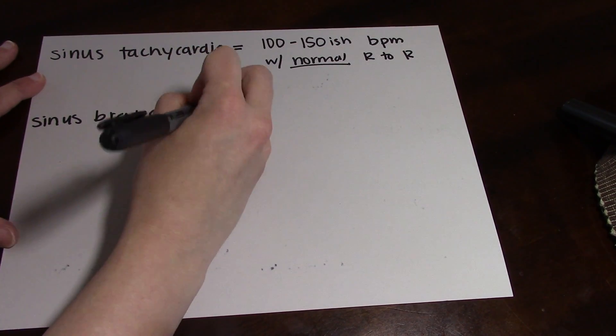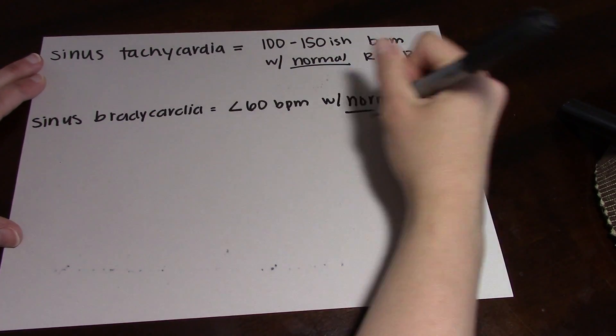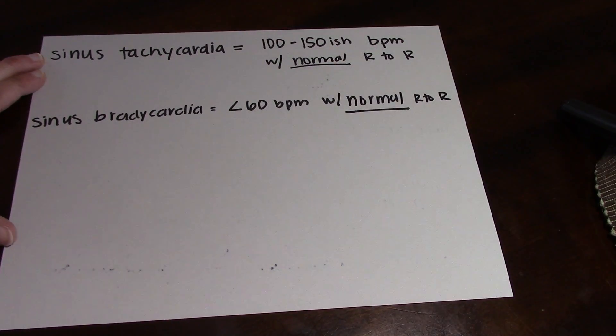The next rhythm is sinus bradycardia, and this is just a slower rhythm. It'll be less than 60 beats per minute with a normal R to R, and again one P wave for every QRS.